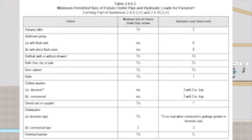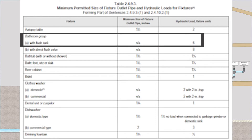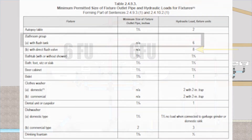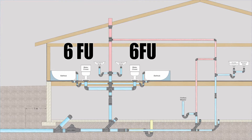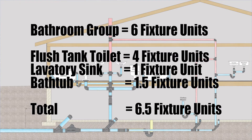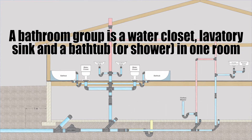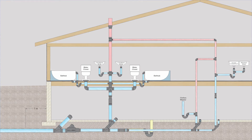Let's head over to table 2493 to look up bathroom group with flush tank water closet. Going across to the right, we find that it is six fixture units. Don't confuse this with a bathroom group with direct flush valve — that's a more commercial setup with a different fixture unit count. So each of these bathroom groups will be worth six fixture units each. Note: if you go through table 2493 and add up all the fixtures individually, it will be 6.5 fixture units per bathroom. For clarity, a bathroom group is a lav sink, a water closet, and a bathtub or shower in one room.